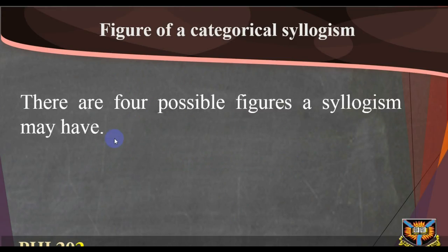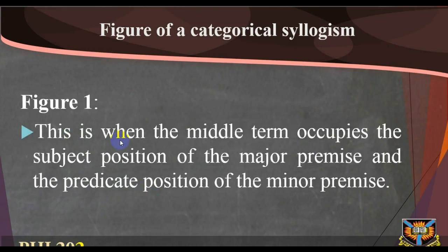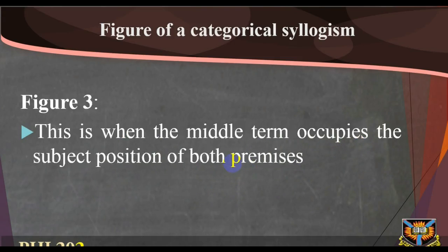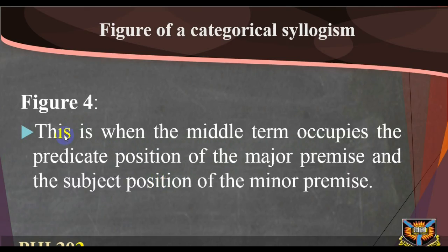The figure of a categorical syllogism is determined by the position of the middle term in the premises of the argument. There are four possible figures: Figure 1 is when the middle term occupies the subject position of the major premise and the predicate position of the minor premise. Figure 2 is when the middle term occupies the predicate position of both premises. Figure 3 is when the middle term occupies the subject position of both premises. Figure 4 is when the middle term occupies the predicate position of the major premise and the subject position of the minor premise.